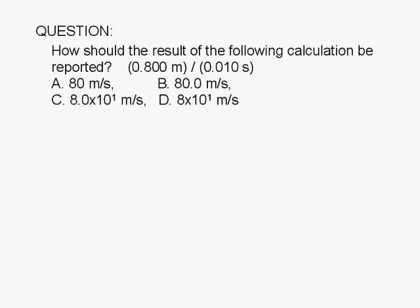How should the result of the following calculation be reported? 0.800 meters divided by 0.010 seconds.